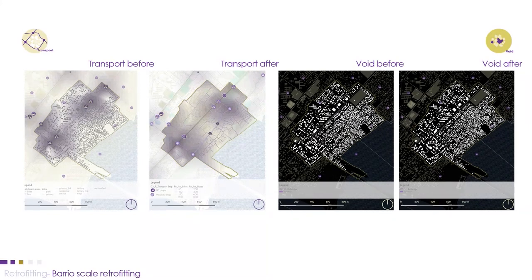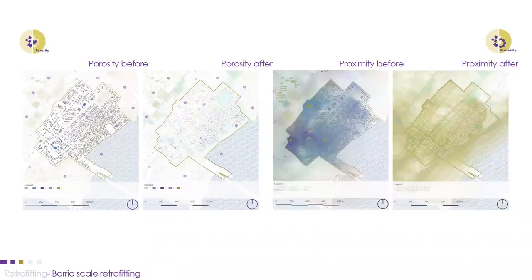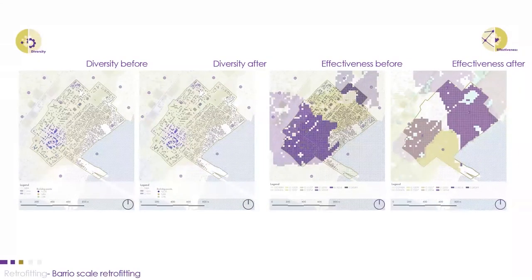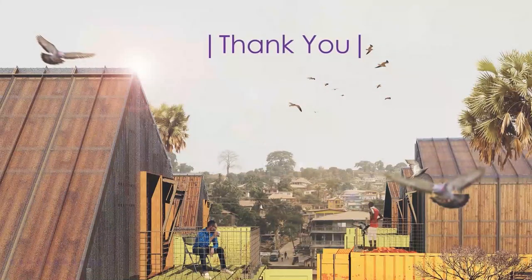The void map now includes more open spaces like community gardens and green buffer regions, making it better than the previous one. The relocation of houses from the flood zone has changed the porosity of barrio 11, and the quality of walking has improved due to new functions added. The diversity map did not show significant change, however the efficiency of transportation coverage in barrio 11 has increased. Thank you so much for your time.